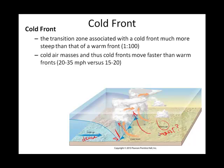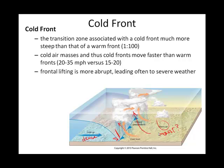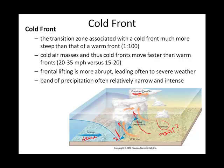The transition zone with a cold front is steeper. Cold air masses also move faster than warm air masses. Frontal lifting is more abrupt, and the cloud associated with severe weather is the cumulonimbus. When precipitation does occur — thunderstorms — they will generally be more short-lived but more intense bouts of precipitation than those associated with a warm front.